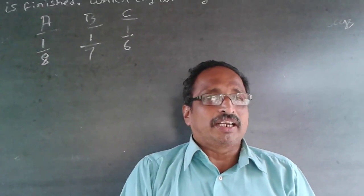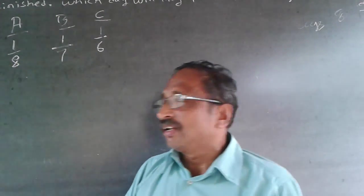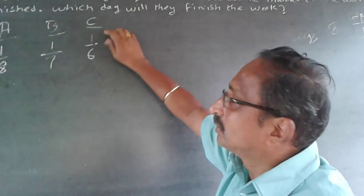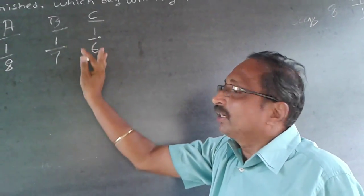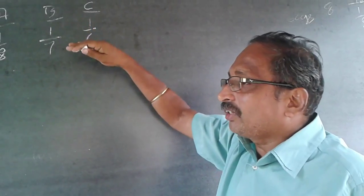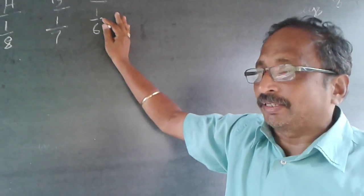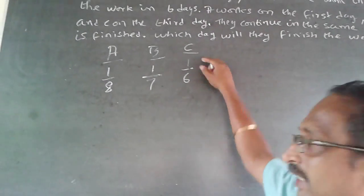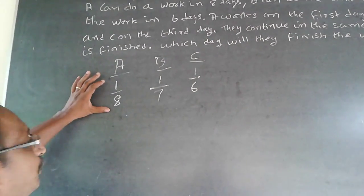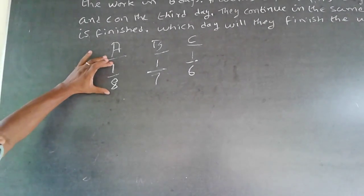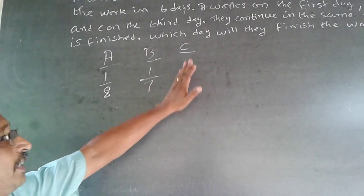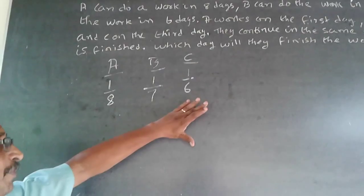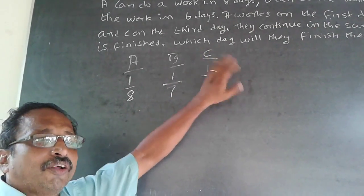Instead, consider: C can do the work in 6 days, so if he is working alone, the work will be over in 6 days. So if you are getting an answer less than 6, you are going wrong somewhere. The minimum number of days required to complete the work will be 6, and the maximum will be 8 (since A takes 8 days). If you get an answer less than 6 or more than 8, you have gone wrong somewhere and will need to redo your working.